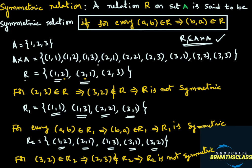So what is important here: for every ordered pair (A, B) belonging to R, if ordered pair (B, A) also belongs to R, we say that the relation is a symmetric relation. I hope you understand this class.